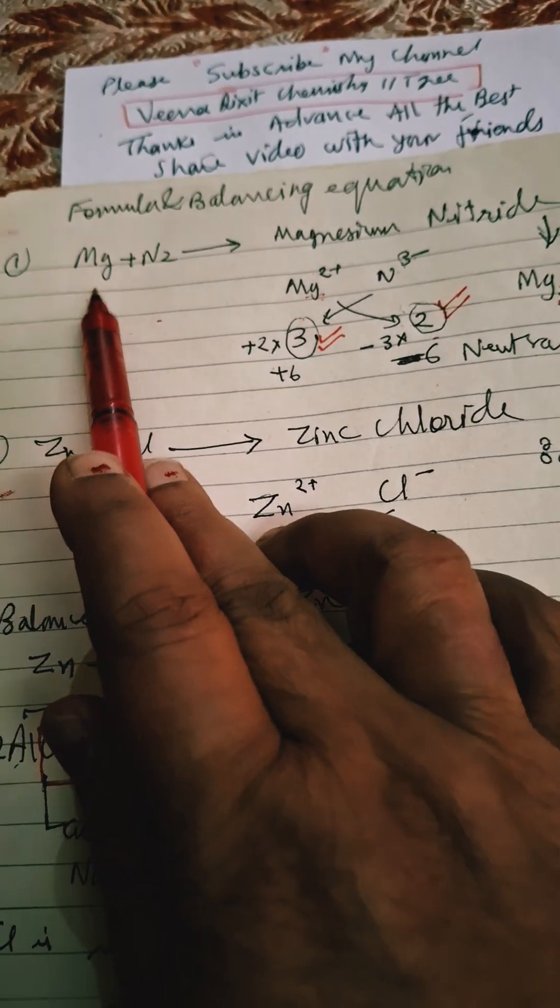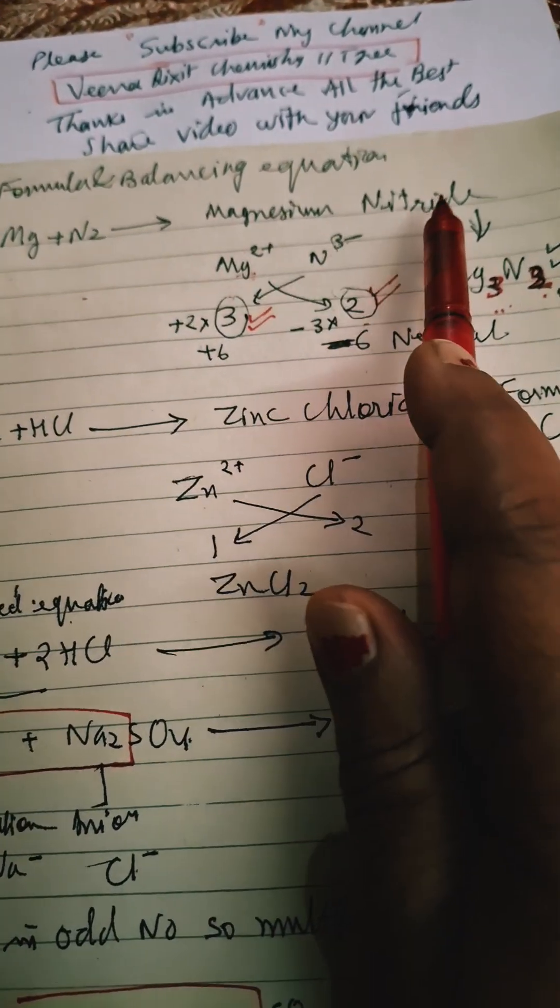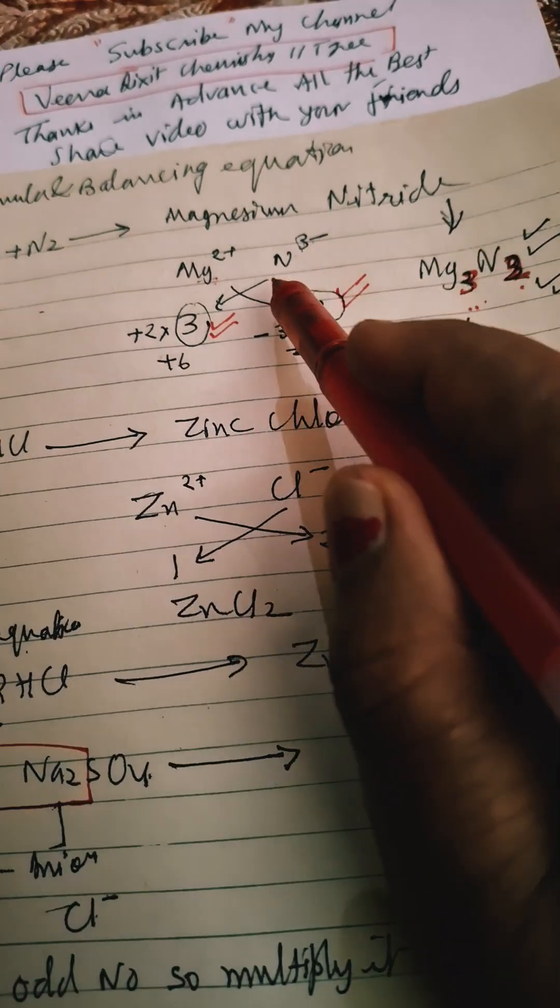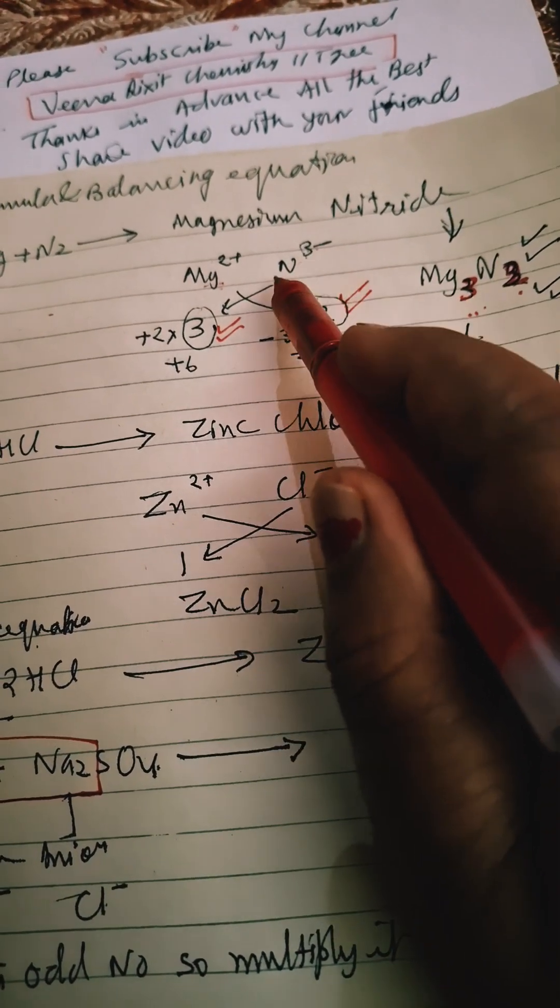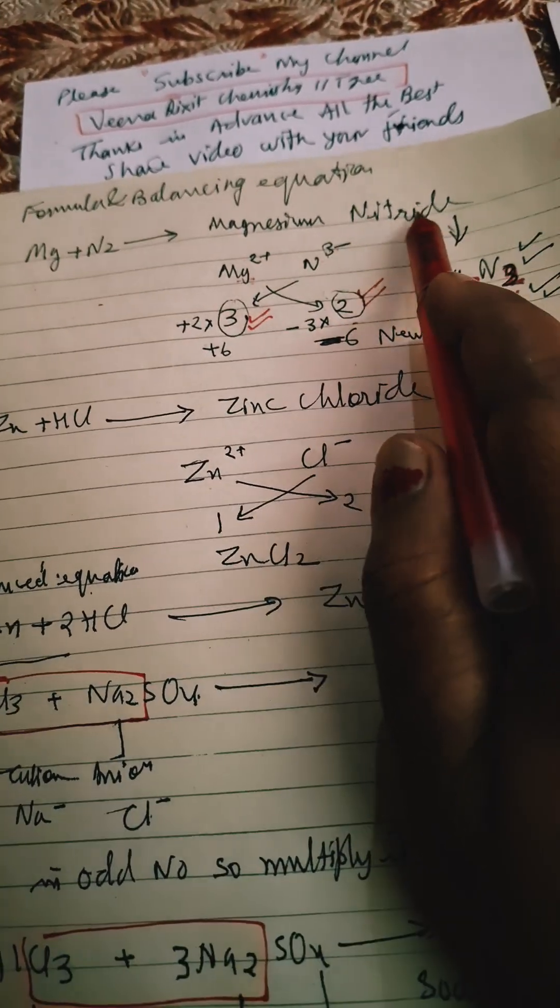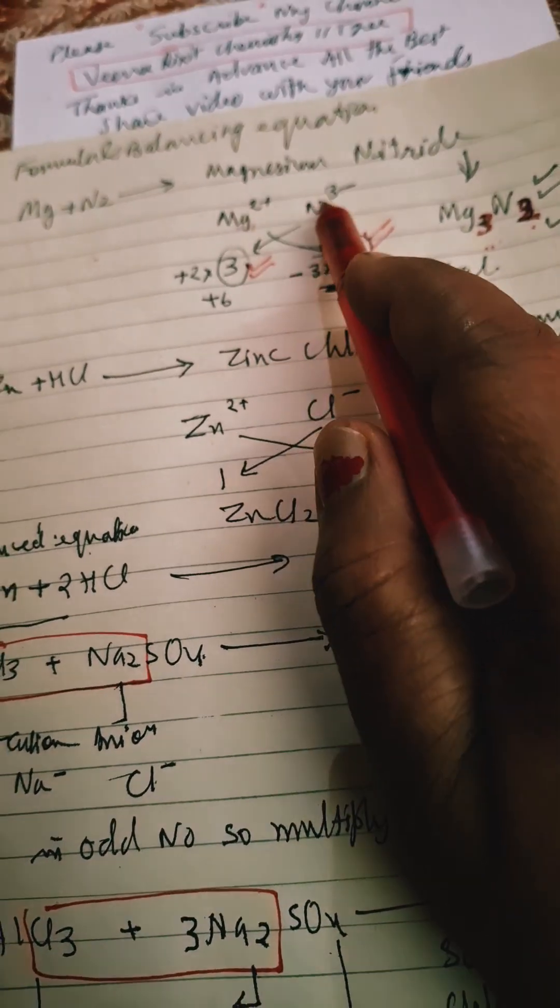We'll do magnesium plus nitrogen to form magnesium nitride. Now what is the symbol for nitride ion? N³⁻, one negative. And Mg is represented as Mg²⁺ ions because it is an ionic compound, so magnesium nitride will be there.